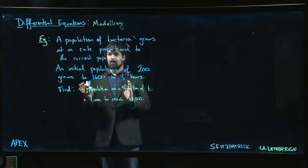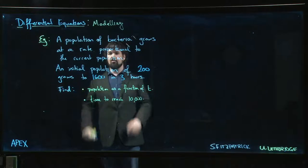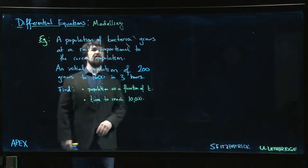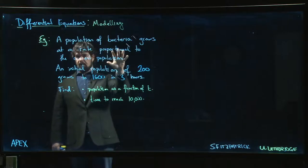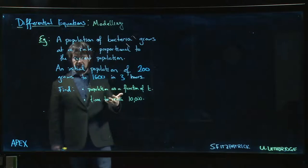So the next model we're going to look at is an exponential growth model. We've already seen that any time you have a quantity that changes in proportion to its current value, you're looking at exponential growth or decay.